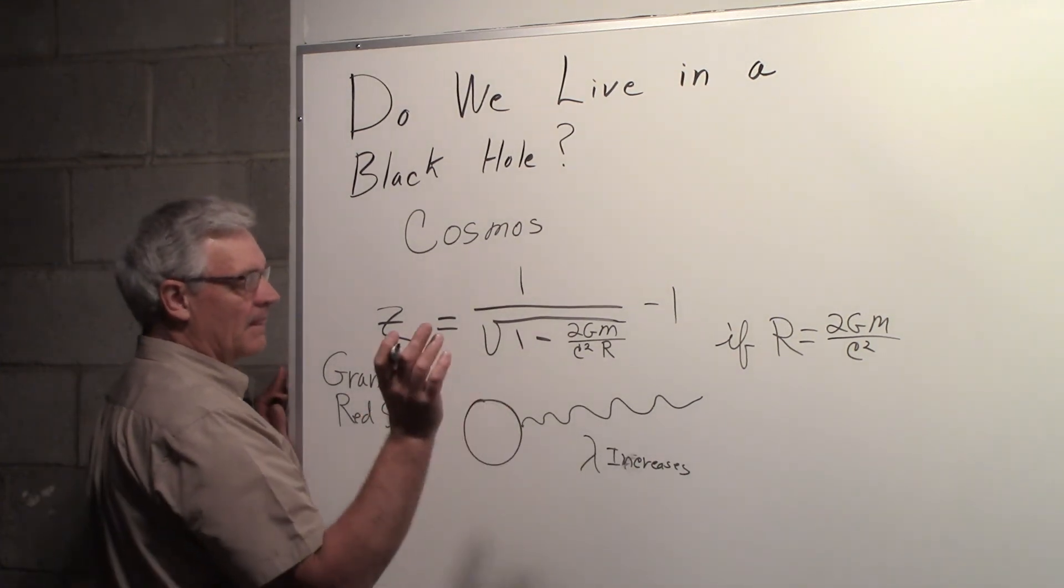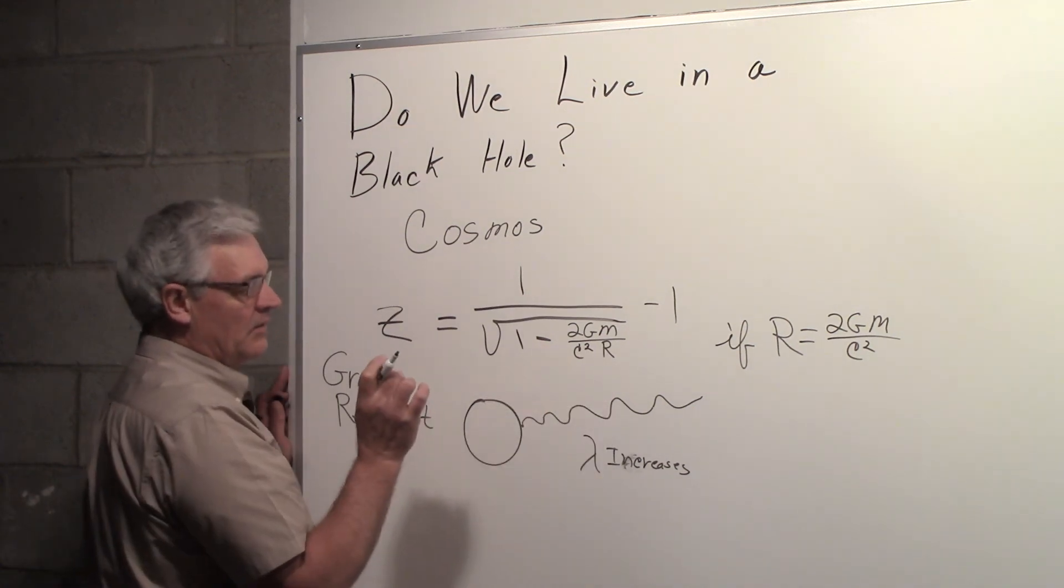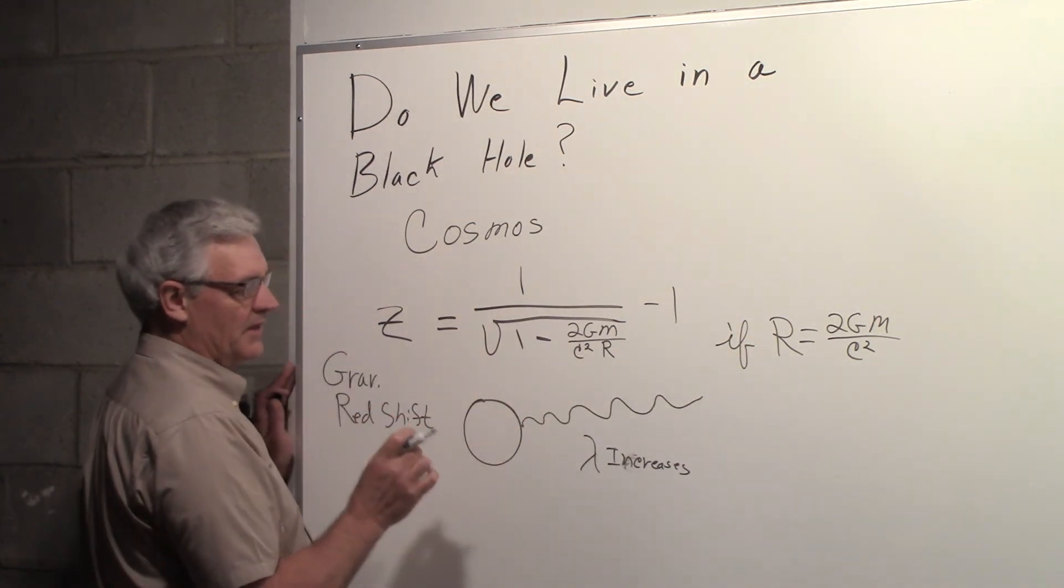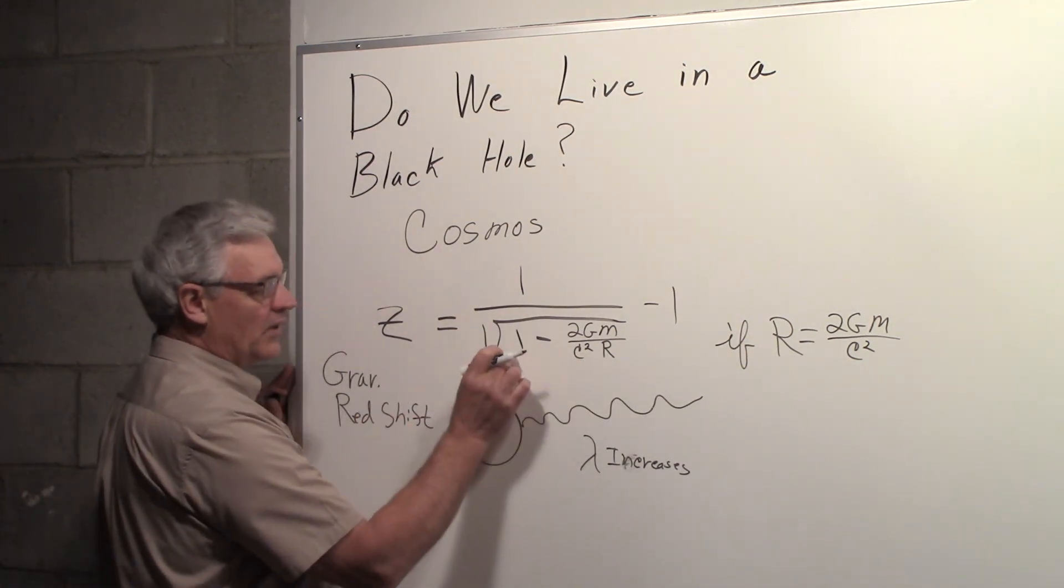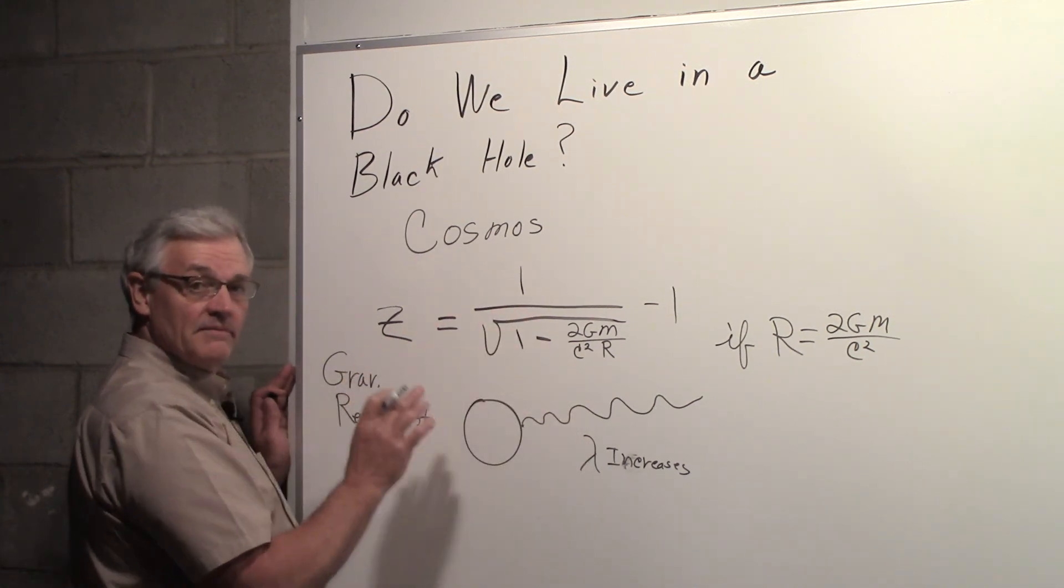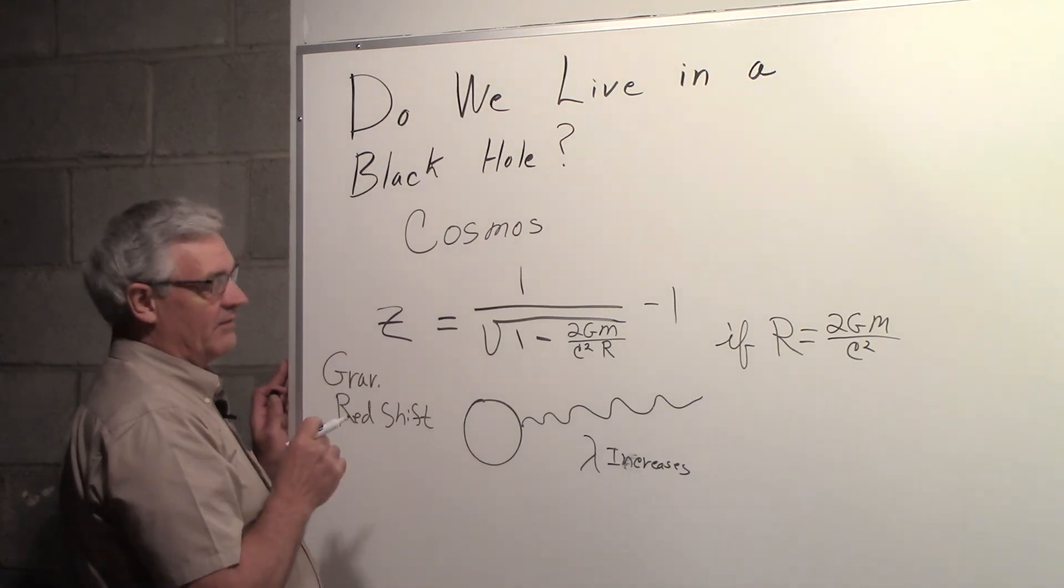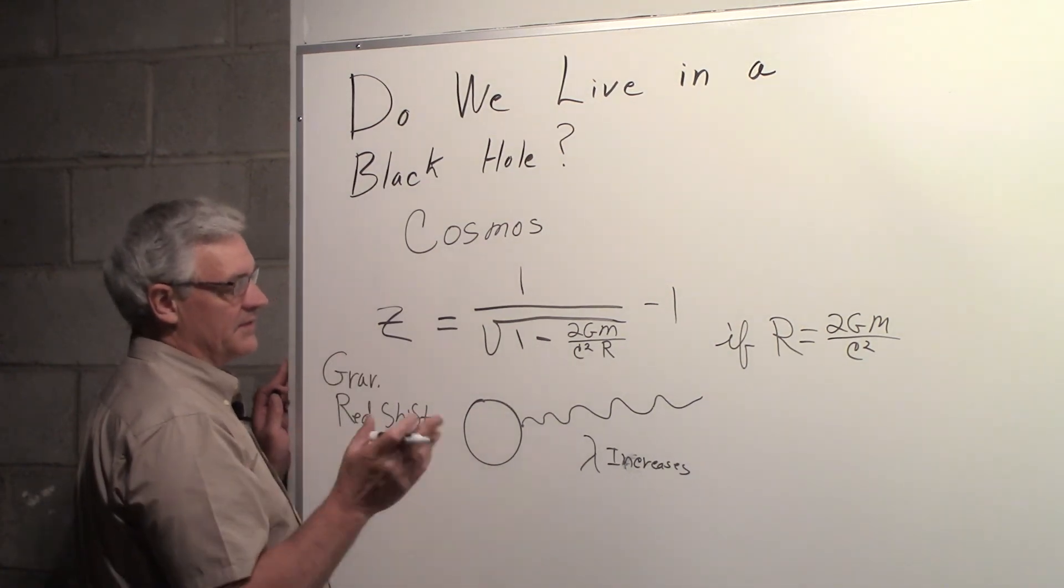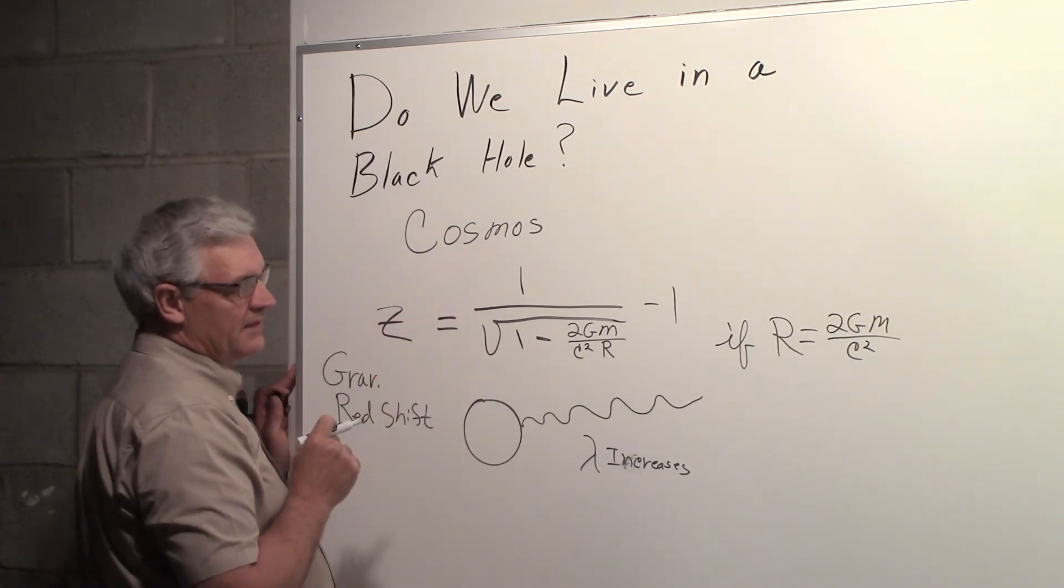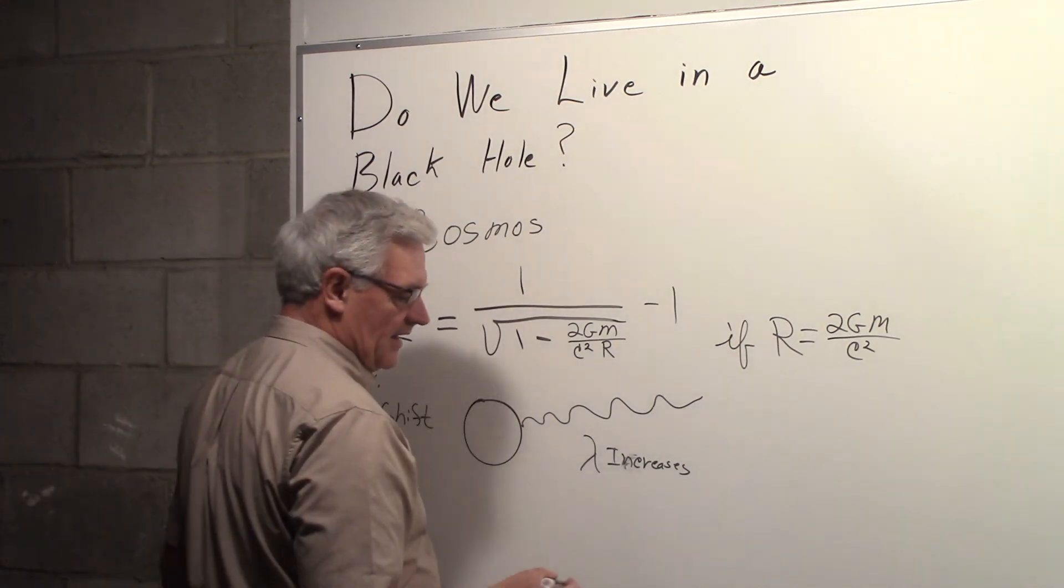So what that means, if we have that sort of setup, light couldn't escape that body. And so that brings us into the idea of a black hole. Again, the gravitational redshift is given by this equation. We're going to ask ourselves what happens if we let r equal 2GM over c squared. If we put that in, we'll get 1 minus 1 is 0, that blows up, z blows up, and that suggests that light's not going to leave.